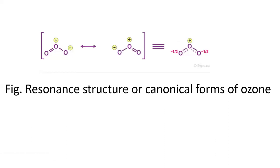This is the example of resonance structures of ozone. Ozone has two resonance structures — one with a double bond, one with a single bond — and this is the resonance hybrid.